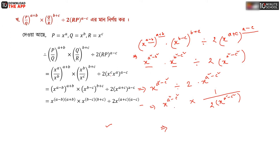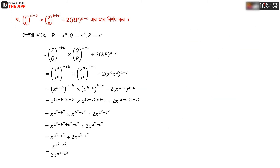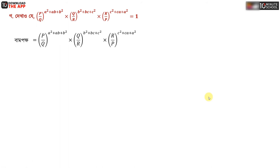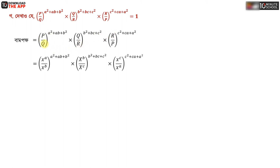Now, let p equal to x to the power a, q equal to x to the power b, r equal to x to the power c. We take the common base and then the powers added together: p minus q by pq, plus q minus r by qr, plus r minus p by rp.